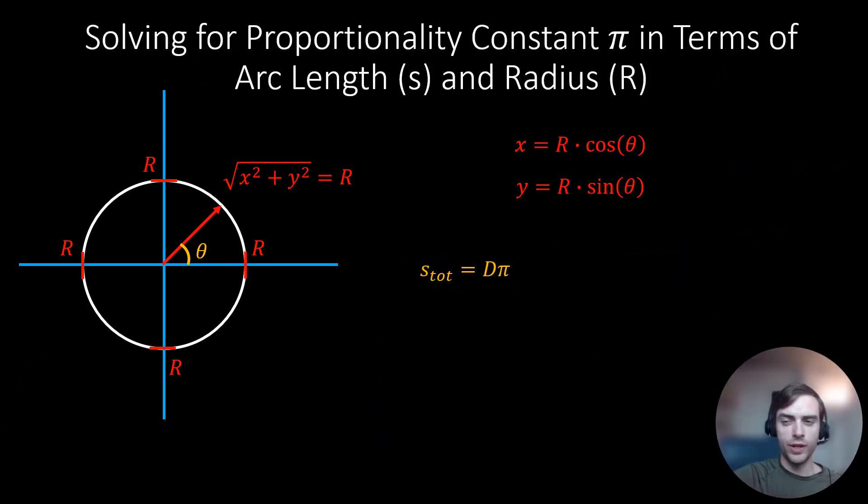Therefore, we can solve for pi in terms of circumference of the circle, s_tot, and diameter d. Recall that diameter is equal to twice the radius of the circle. And therefore, we could say that pi is equal to s_tot over 2r.